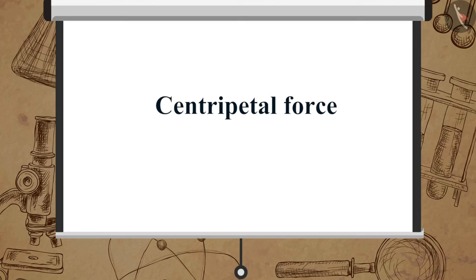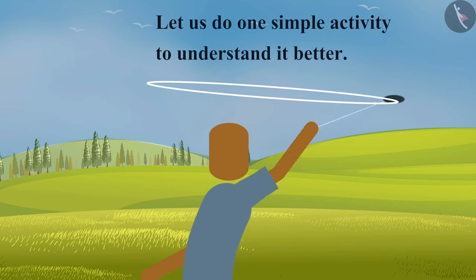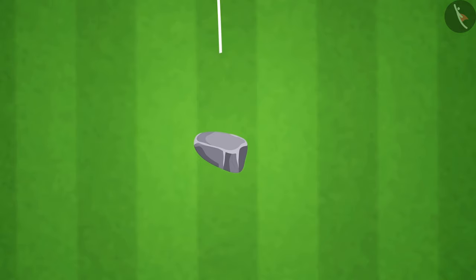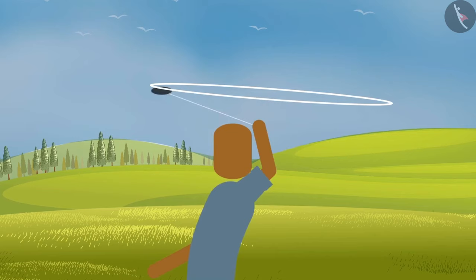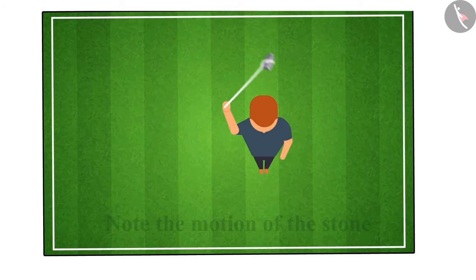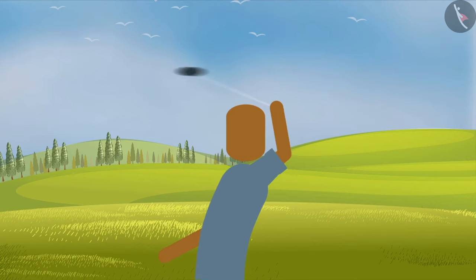Now let us try to understand centripetal force. Let us do one simple activity to understand it better. Take a piece of thread and tie a small stone at one end, hold the other end and whirl it in a horizontal circle.